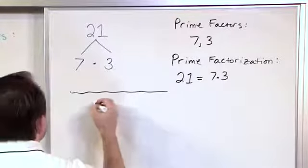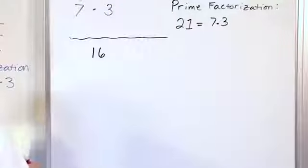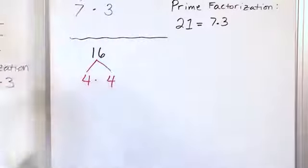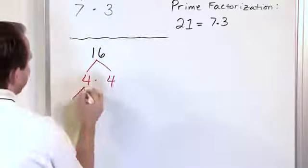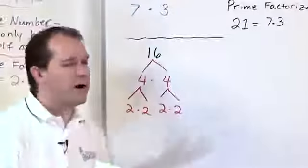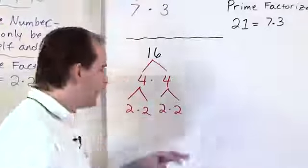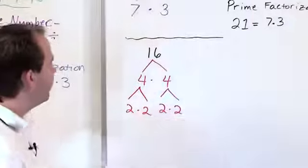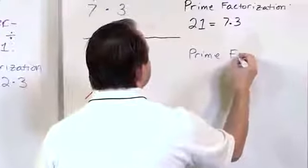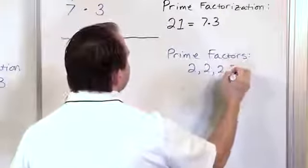Let's work on the number 16 and find its prime factorization. The first thing we want to do is figure out what times what gives us 16. Let's pick 4 times 4, since that equals 16. I can bust up each 4 into 2 times 2, and do the same for the other 4. The number 2 is prime, so the tree is done — there's nothing else to do anywhere. All we have is a bunch of 2's at the bottom, so the prime factors are 2, 2, 2, 2.